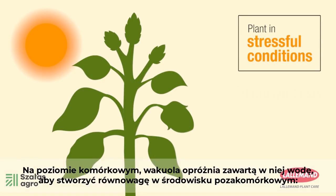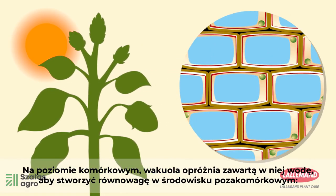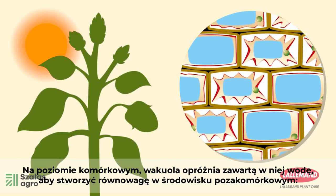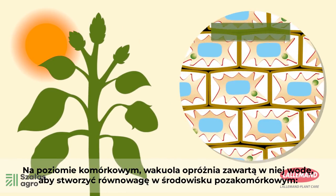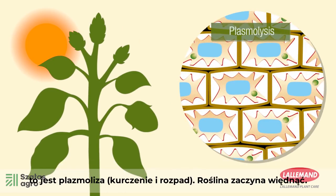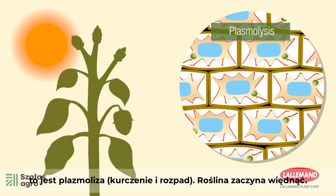At the cellular level, the vacuole empties the water it contains to create balance in the extracellular medium. This is plasmolysis. The plant wilts.